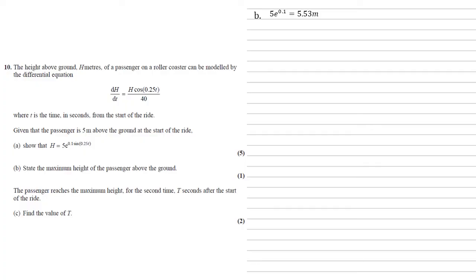The passenger reaches the maximum height for the second time t seconds after the start of the ride. Find the value of t. So they've reached the maximum height, which means again sin 0.25t must equal 1.